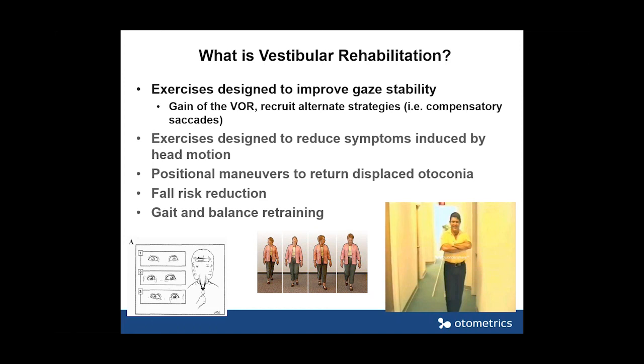Some of the other things vestibular rehabilitation does: we develop exercises designed to reduce symptoms generated by head motion, perform positional maneuvers to return displaced otoconia in benign paroxysmal positional vertigo, and focus on fall risk reduction and gait and balance retraining. Most patients present complaining about their balance, falling, and feeling dizzy — they don't typically say they have gaze instability. But gaze instability is one of the primary exercises important in vestibular rehabilitation and helps reduce these other symptoms.